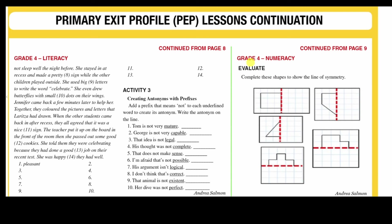Now evaluate — complete these shapes to show the line of symmetry. If we have this shape here, we would need to create another half on this side with the same length and same width to match this one. Same thing with the triangle, and we would have to do the same with the other shapes, because remember that this line creates one half — so to complete it, we need to create the other half.